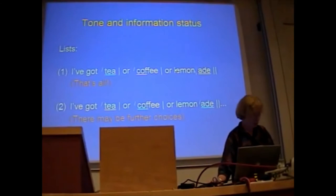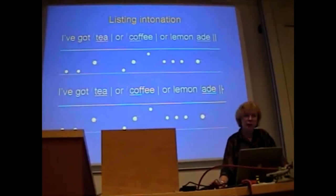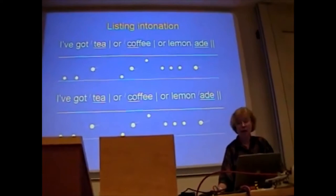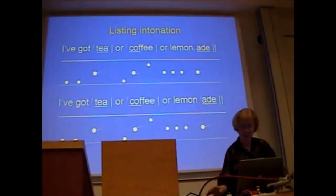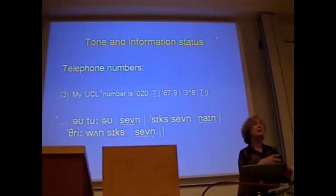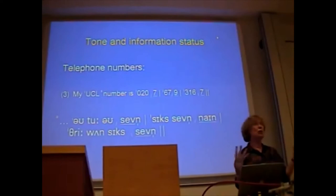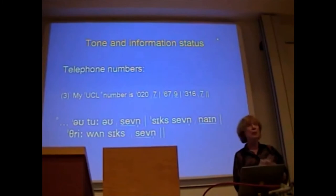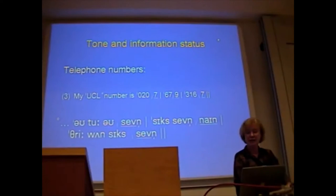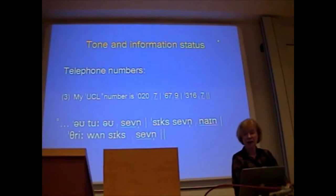The same sort of thing happens when we're delivering stock pieces of information. For example, telephone numbers — we tend to group them in well-understood ways. So I could say: '0207, 679, 3167.' 0207 — rise; 679 — another rise; 3167 — got to the end, right down to the bottom. That's one way of grouping it, and it uses rising tones for the non-final groups and a falling tone to signal completion.